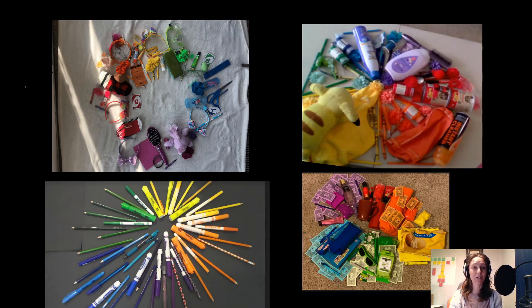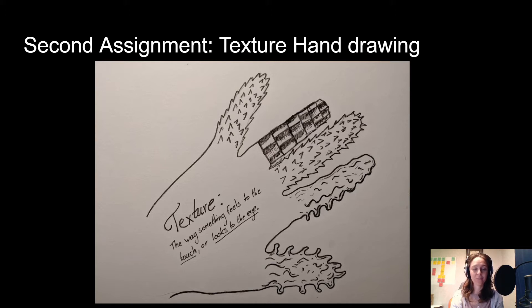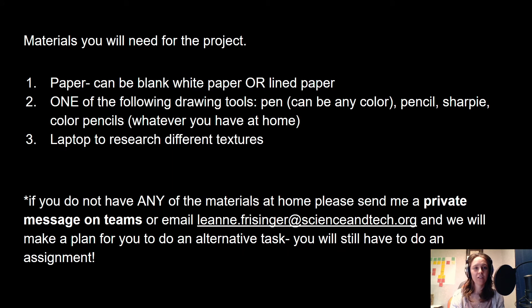Looking at what we're going to be doing this week: your second assignment is a textured hand drawing. First of all, what is texture? Texture is an element of art — it's the way something feels to the touch or looks to the eye. Texture is incredibly important in visual arts, and when artists show different textures, they use line, value, and tone to create it.